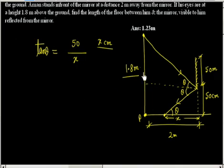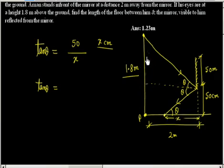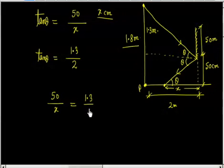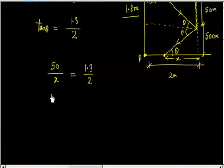Now tan θ can also be written from the second triangle. The total height of the person is 1.8 meters, and the mirror bottom is at 0.5 meters, so this side is 1.8 minus 0.5 equals 1.3 meters. The horizontal distance is 2 meters. So tan θ from this triangle equals 1.3 divided by 2. Since this is a ratio, units cancel.